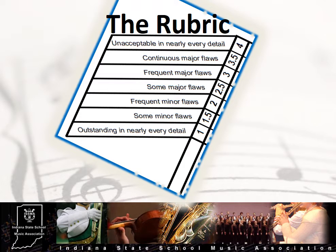A 1 in a category would indicate a performance that was outstanding in nearly every detail. This does not mean a perfect performance, but one that demonstrates obvious proficiency and preparation. A 1.5 indicates some minor flaws, but still a very polished performance. A 2 would indicate frequent minor flaws, indicating a performance that is perhaps a little less polished. A 2.5 is described as some major flaws.